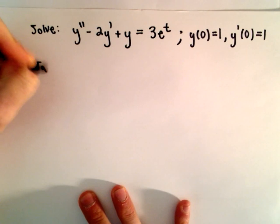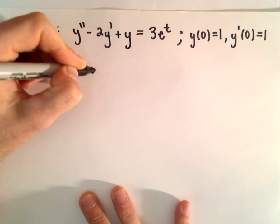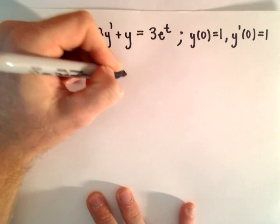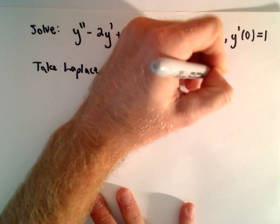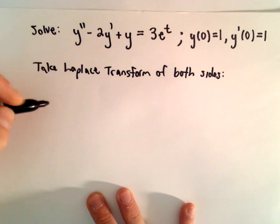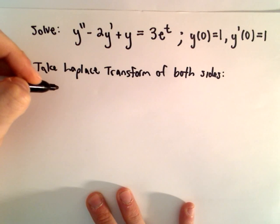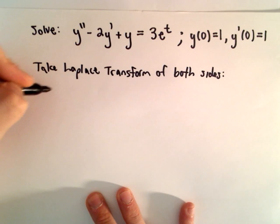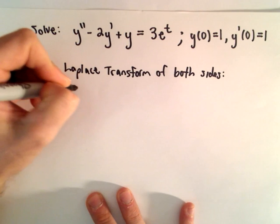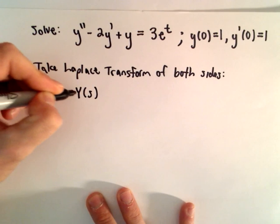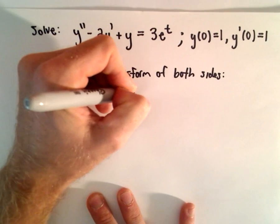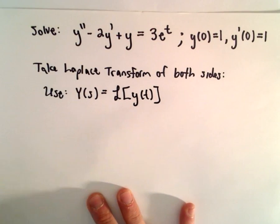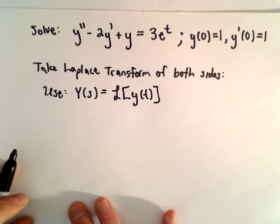The first thing we're going to do is simply take the Laplace transform of both sides. We can use linearity to break it up on the left side. One other thing, just notation wise — I'm going to use capital Y of s to denote the Laplace transform of the function y of t. So you'll see a lot of Y's floating around in a moment referring to the Laplace transform.